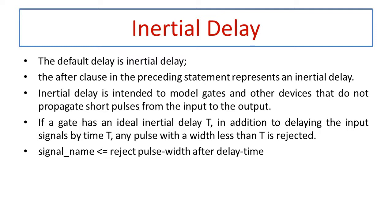The default delay introduced in the system is called inertial delay. The 'after' clause in the signal assignment statement represents an inertial delay — for example, 'sum <= a xor b after 10 nanoseconds'. It is intended to model gates and other devices that do not propagate short pulses from input to output. It can be used to filter out pulse widths which are less than the given amount of time.